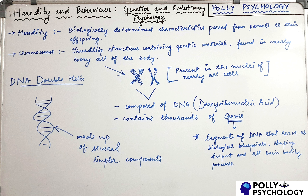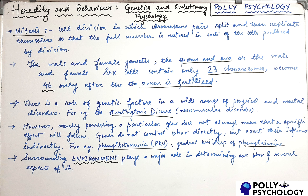Genes help in shaping development and assist in all basic bodily processes, so genes are very important. Next is mitosis. Mitosis is the type of cell division in which chromosome pairs split and then replicate themselves so that the full number is restored in each of the cells produced by division. There are two kinds of cell division — mitosis and meiosis. Mitosis is the one that occurs in most human body cells.